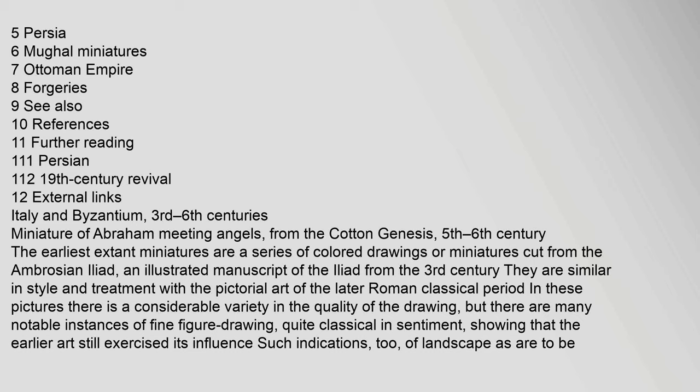Miniature of Abraham meeting angels, from the Cotton Genesis, 5th–6th century. The earliest extant miniatures are a series of coloured drawings or miniatures cut from the Ambrosian Iliad, an illustrated manuscript of the Iliad from the 3rd century. They are similar in style and treatment with the pictorial art of the later Roman classical period. In these pictures there is a considerable variety in the quality of the drawing, but there are many notable instances of fine figure drawing, quite classical in sentiment, showing that the earlier art still exercised its influence. Such indications of landscape as are to be found are of the classical type.